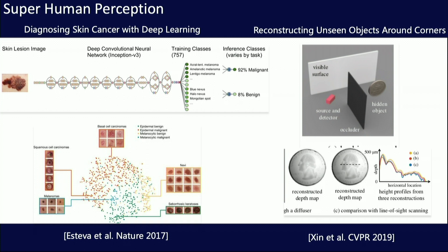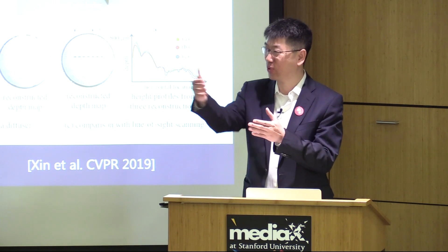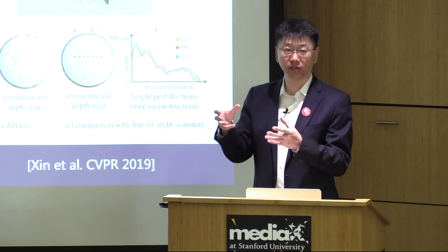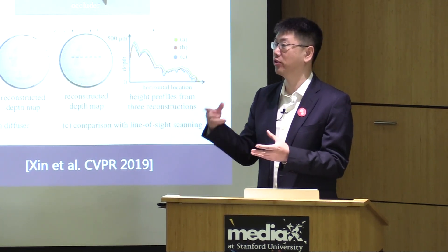One example is superhuman perception. Both of these papers I quoted are from last year and 2017. One is about diagnosing skin cancer using images — a deep learning application. The other is about reconstructing an unseen object across a corner, published last year. Both of these are amazing applications that even humans cannot do — a human eye cannot see across a corner, but a computer with the right algorithm can do that using deflections, shadows, and so forth.